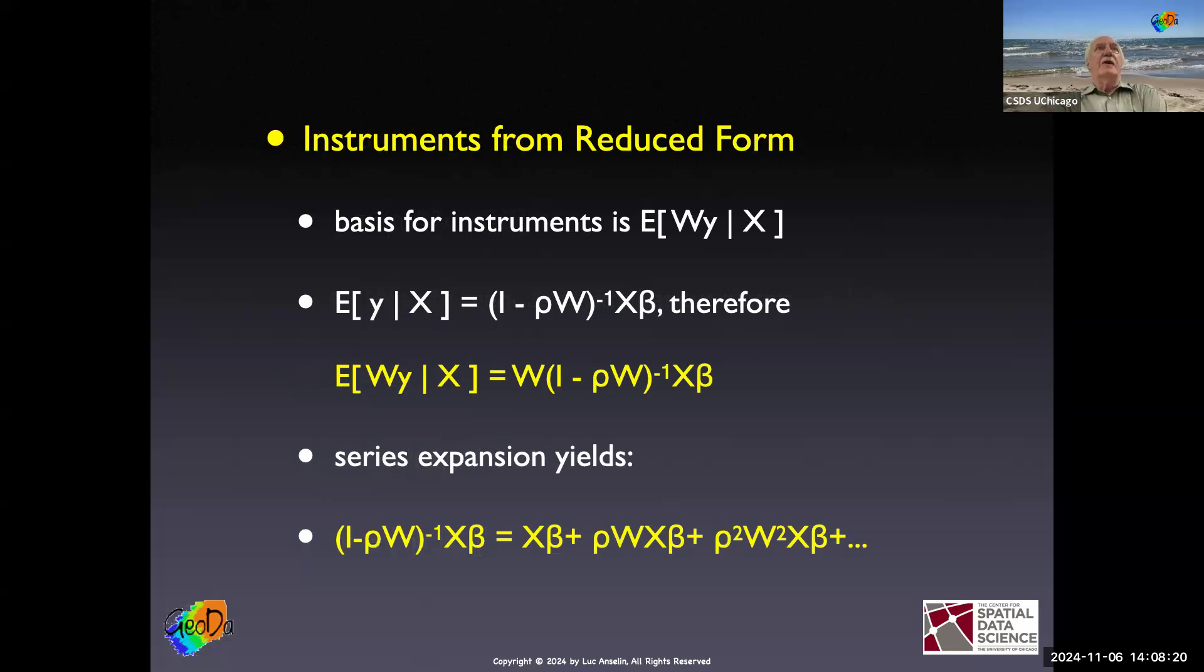And as I said, in the generic two-stage least squares case, it's sort of a guessing game, or as I put it, whoever screams the loudest, what are the best instruments? In the spatial case, we actually have this reduced form. And the reduced form expresses Y as a function of all the X's, as this inverse transformation. We've seen this before. We've seen it when we looked at the impacts. This is what we call the filtering matrix. I minus rho W, we take its inverse. Rho parameter is here, beta parameters are there. So they're all in here.